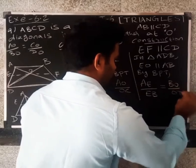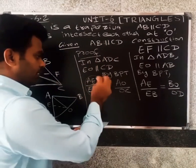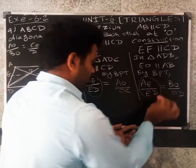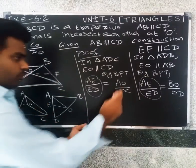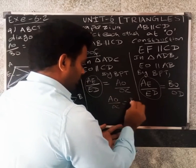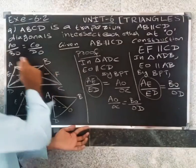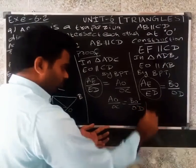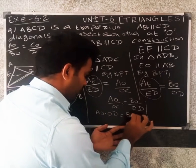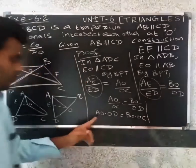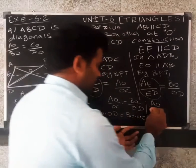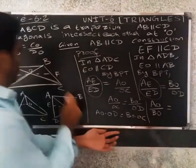So AE divided by ED equals AO divided by OC, and AE divided by ED equals BO divided by OD. Therefore, AO by CO equals BO by OD. Cross-multiplying, AO into OD equals BO into OC. In the final, AO divided by BO equals CO divided by DO.